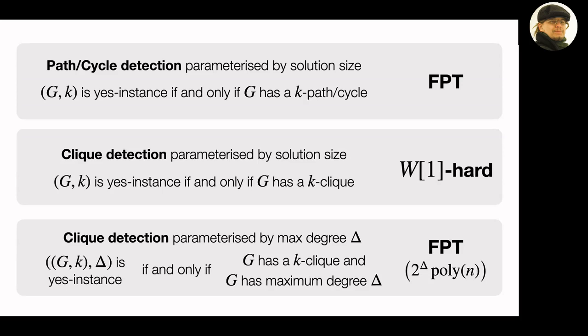One thing you can do in the fixed parameter setting is change what the parameter denotes. For example, you can look at clique detection parameterized by the maximum degree of the graph. Your instance is a graph and an integer k, and the parameter is delta, the maximum degree. This is fixed parameter tractable because if you have bounded max degree, you can look at each node and do clique detection in its neighborhood, which is very small.